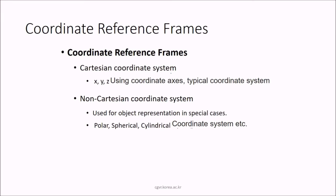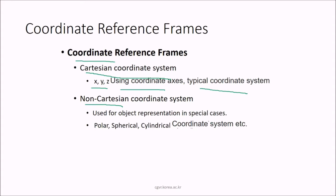Coordinate reference frames have two partitions. First, Cartesian coordinate systems — in this we have x, y, z and x, y. This is a typical coordinate system using coordinate axes. While in non-Cartesian coordinate systems, used for object representation in special cases like polar, spherical, and cylindrical.